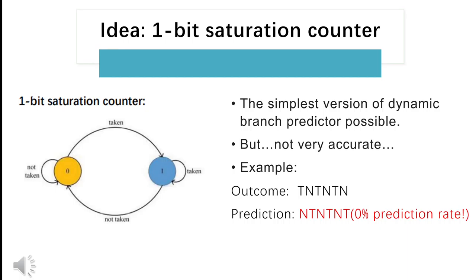A critical problem of this predictor happens when the jump direction of the branch instruction changes every time. Then the accuracy of branch prediction based on the branch instruction's last execution result will be 0%. Specifically, if the branch outcome is taken, not taken, taken, not taken, then the outcome of the one-bit branch predictor will be not taken, taken, not taken, and taken — which produces a 100% misprediction rate.